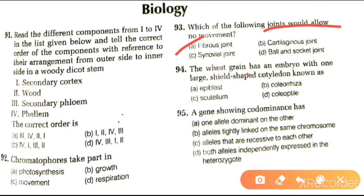Next question: the wheat grain has an embryo. Which one is the largest seed structure? Wheat is a monocotyledon. Options are epiblast, coleorhiza, scutellum, coleoptile. The answer is the scutellum.